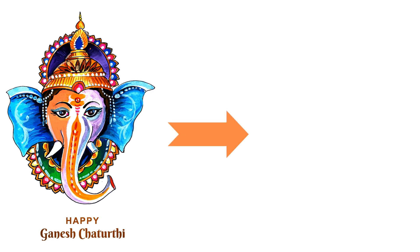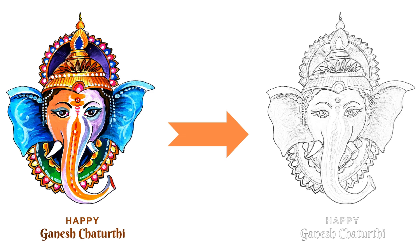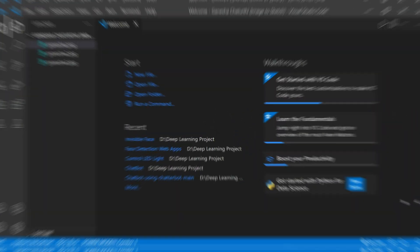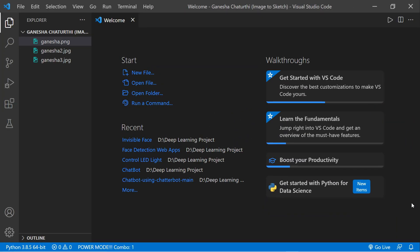What we are going to cover today: we'll take one real image — that means a normal RGB image — and convert it into a fancy sketch image. Let's jump into the code.